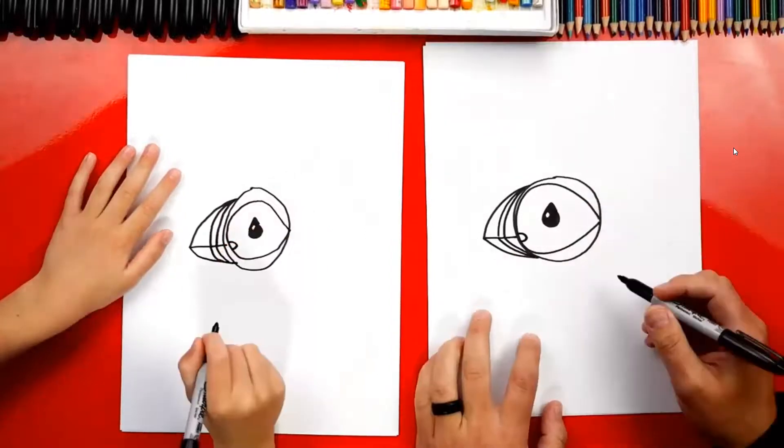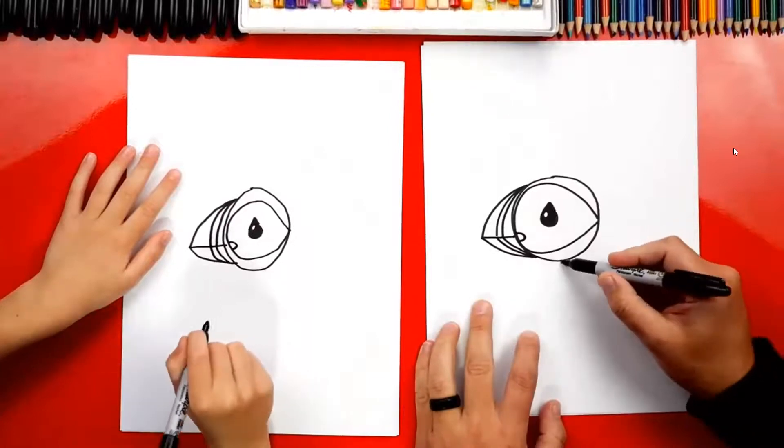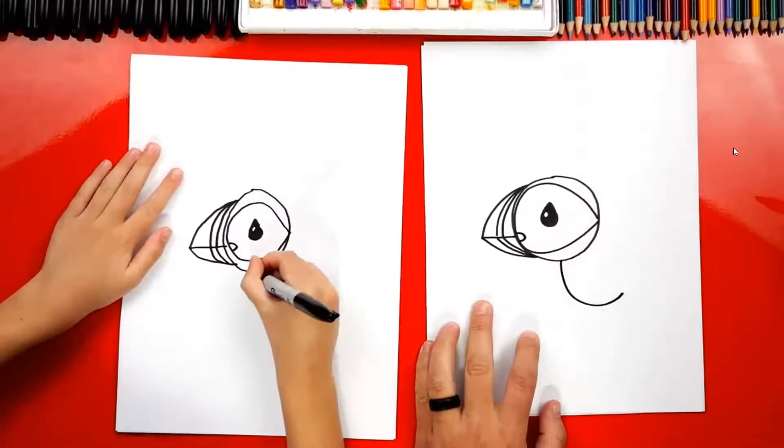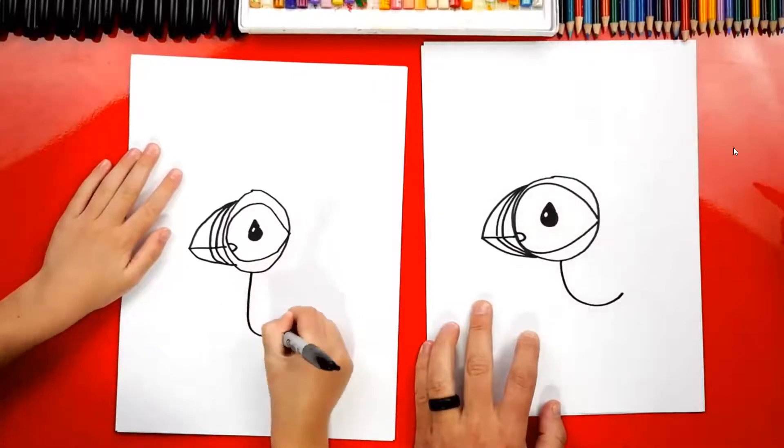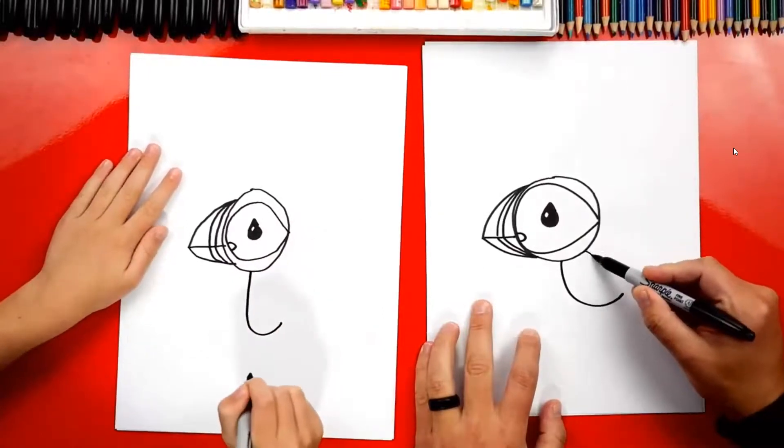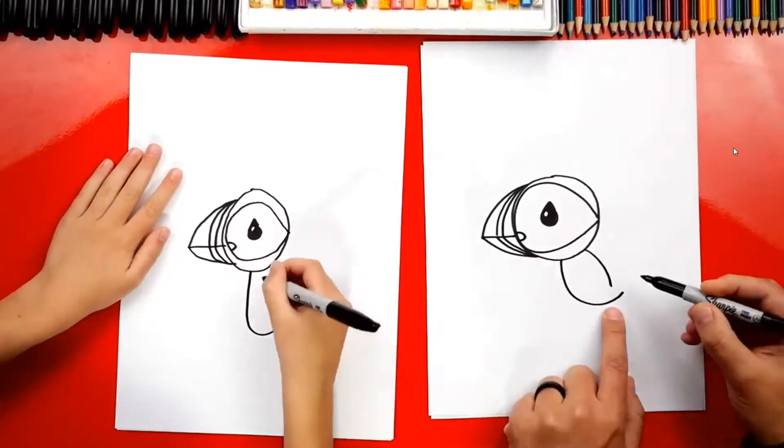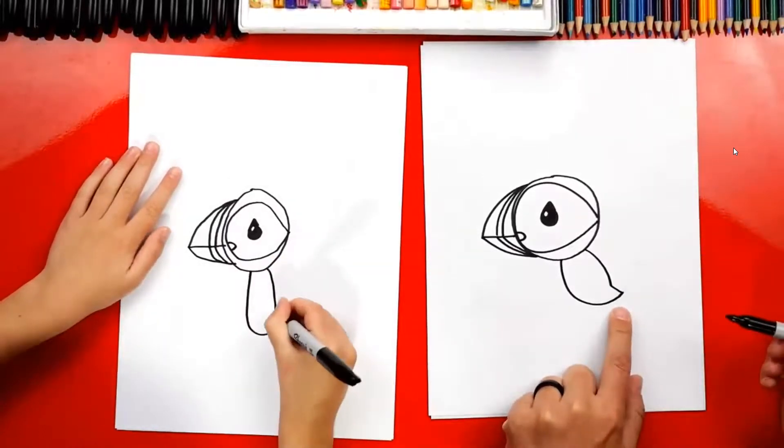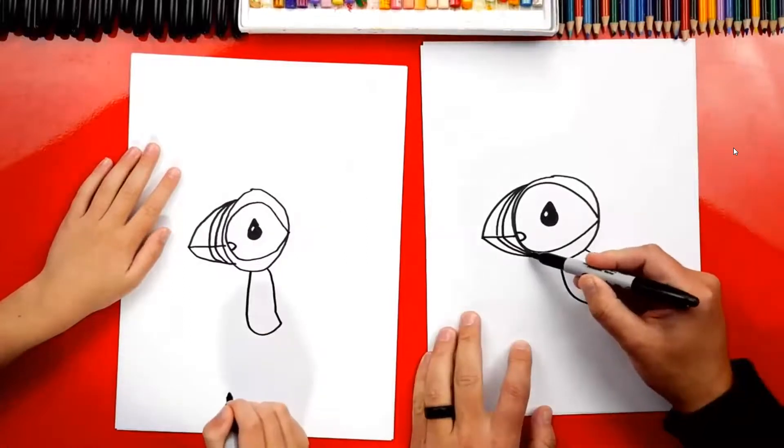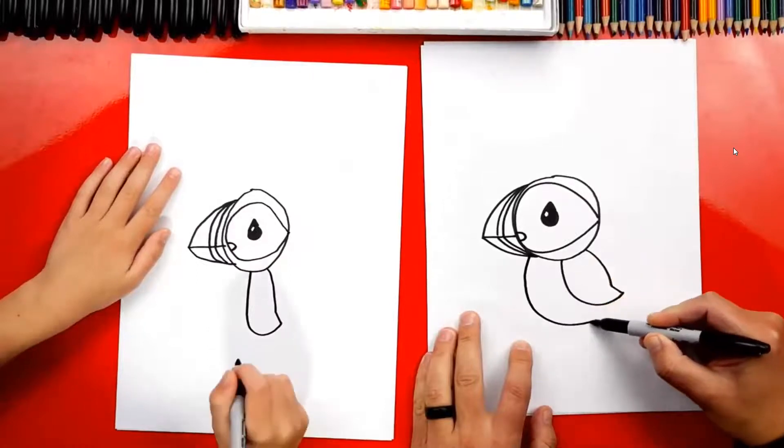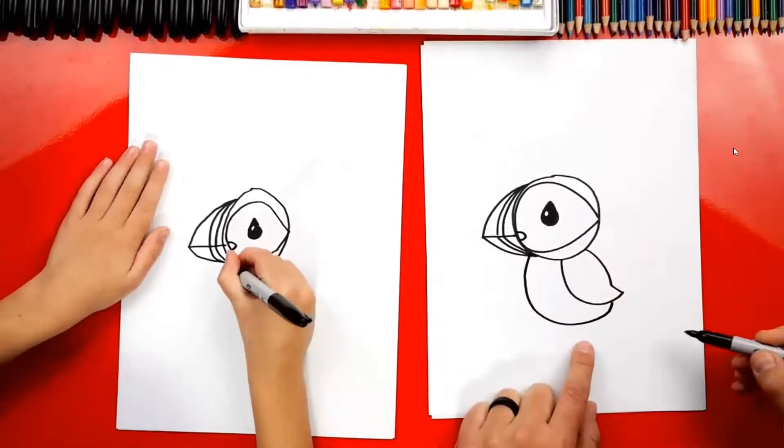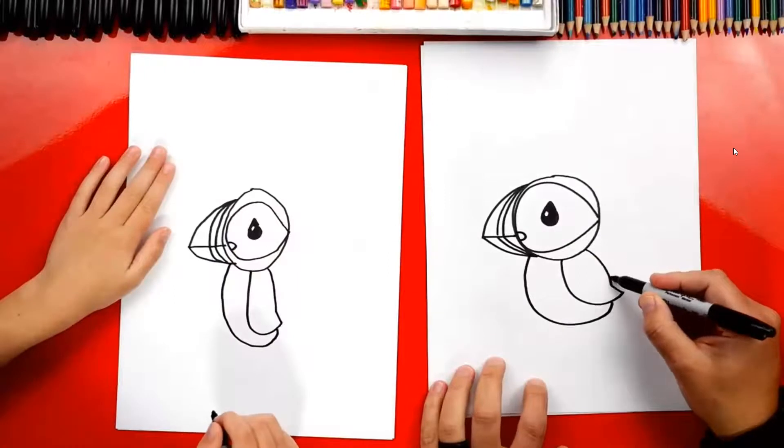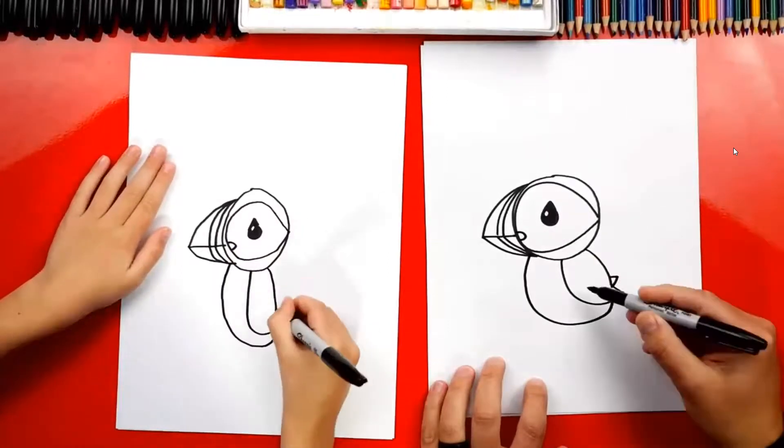All right, now we're ready to draw the body and the wings. Let's start right here on the right underneath the head. You're going to draw a big curve that comes down like this and then back up to the wing. Let's also add another sideways V right here. Maybe those are more feathers coming out of the wing.